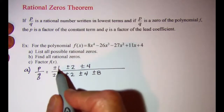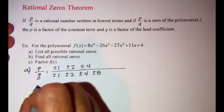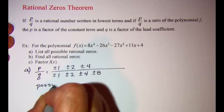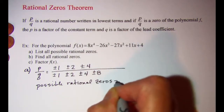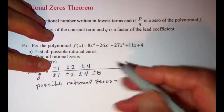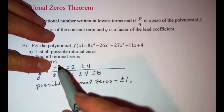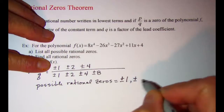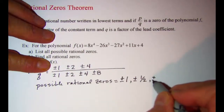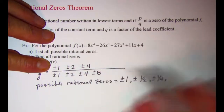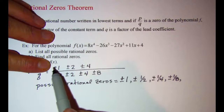Now I want to list the fractions. Taking 1 as the numerator, my possible rational zeros are plus or minus 1/1 which is 1, plus or minus 1/2, plus or minus 1/4, and plus or minus 1/8. Now I'm done with 1 for the numerator.